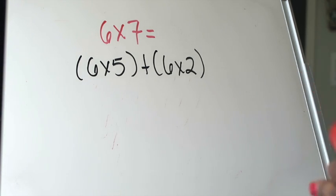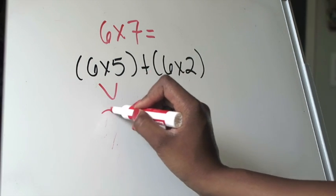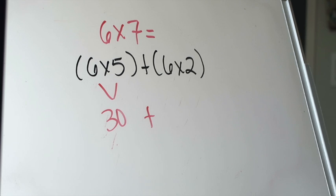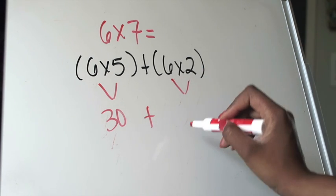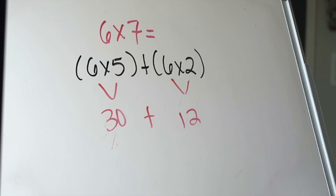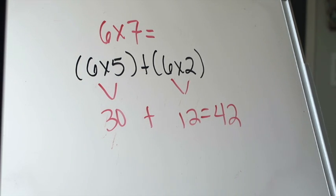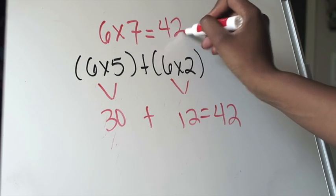Now let's move away from the array and work this problem out. My original problem was six times seven. I decided to break that up as six times five plus six times two, knowing I need to add the two products, and reminding myself that five plus two is seven. Six times five I know very easily — that's 30. I bring down the addition sign to remind myself I must add my products. Six times two — I know my twos — that's 12. So 30 plus 12 equals 42. Therefore, the product of six times seven is 42.